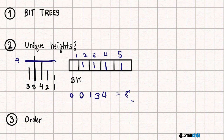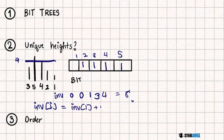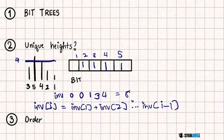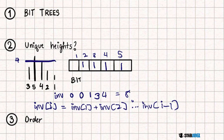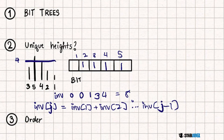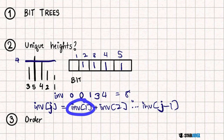The only hairs that count are those with a smaller height — those are going to have the same number of inversions. So if we have an array INV, we can define INV[j] as equal to INV[1] + INV[2] + ... + INV[j-1]. All we need to do is add up the total inversions of hairs with a smaller height than our current cut.